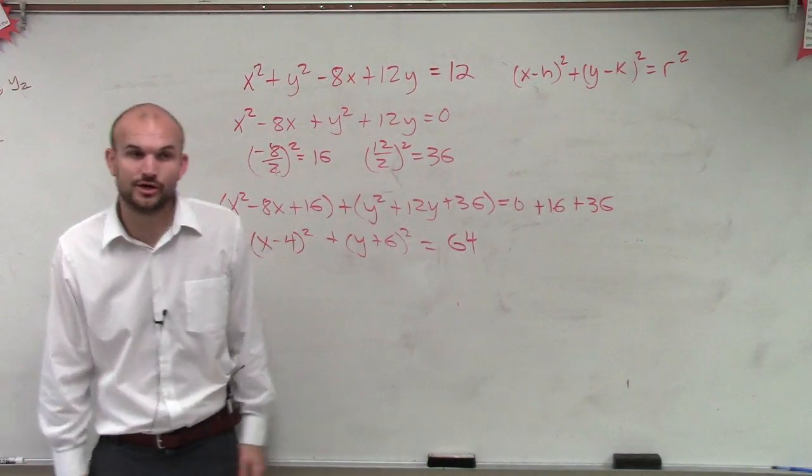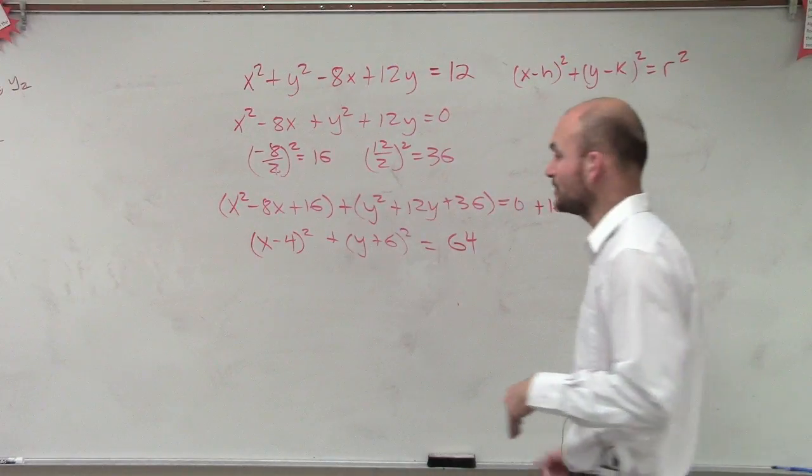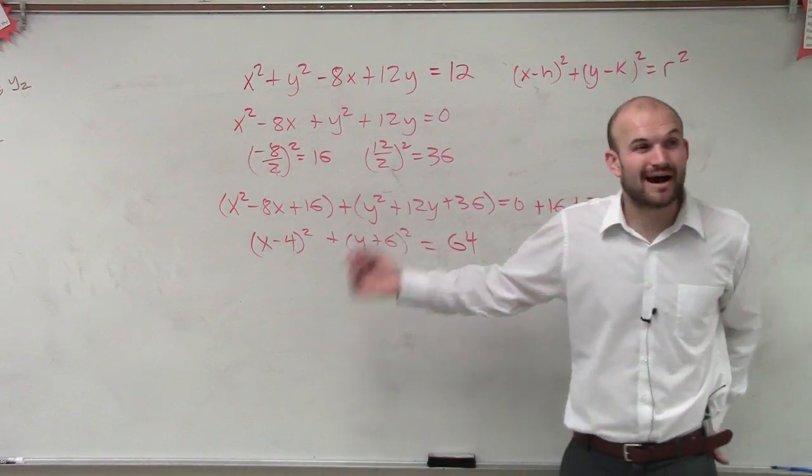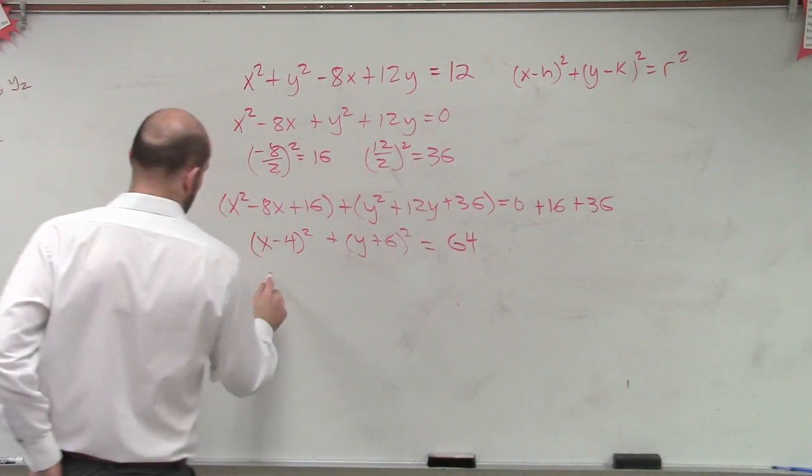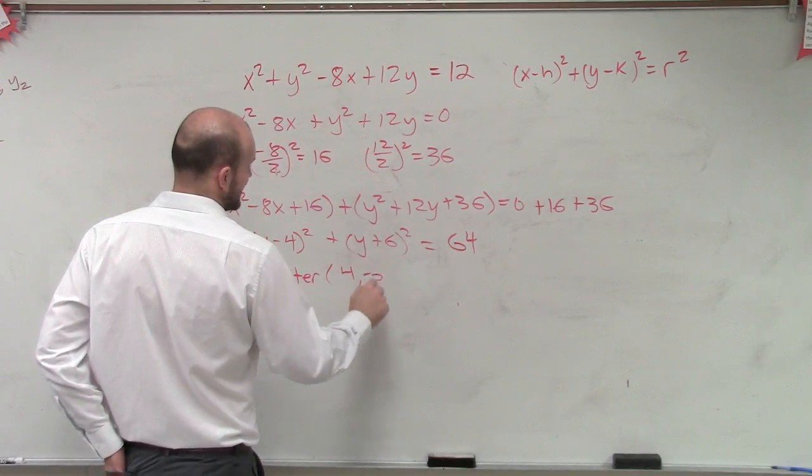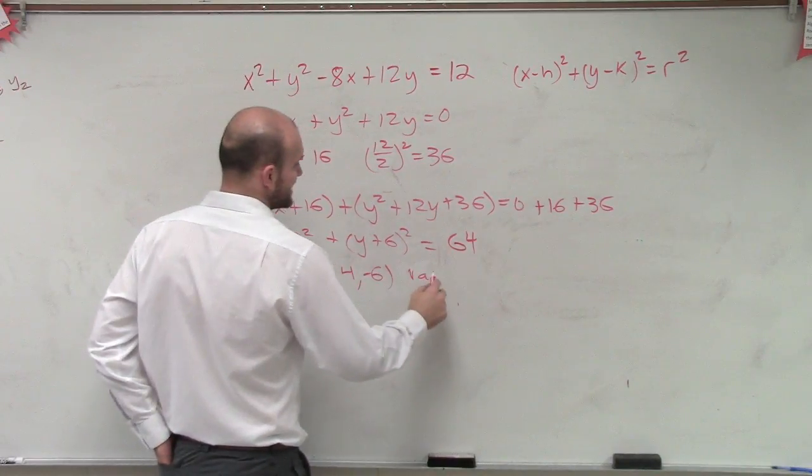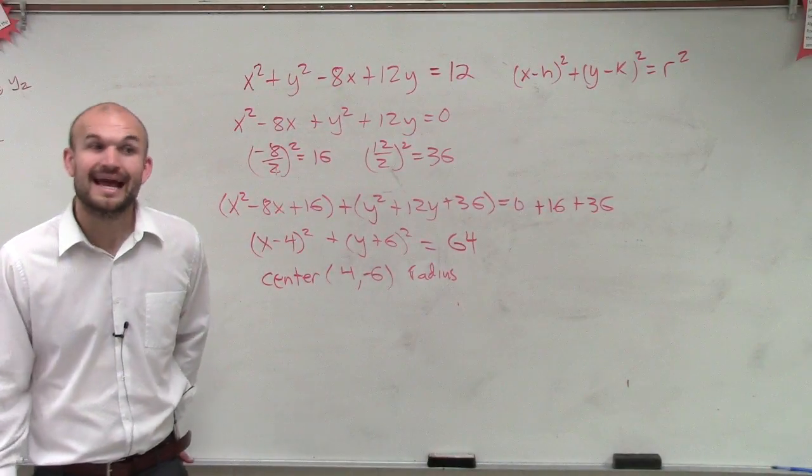So now, what we can do is now that we're looking at this, I can determine what the center is. The center is going to be 4 comma negative 6. And then my radius is 8. So now is it going to be possible for me to graph this? Of course.